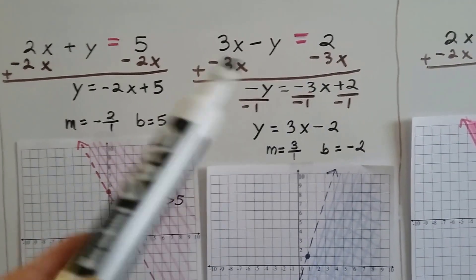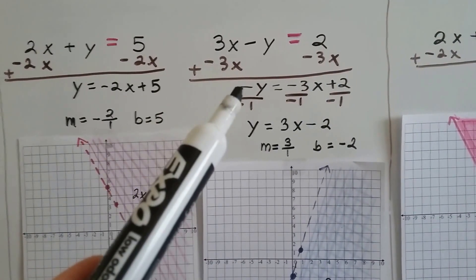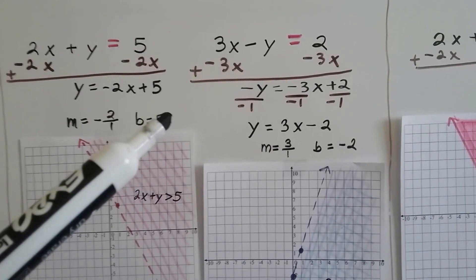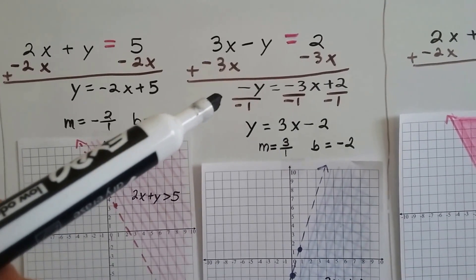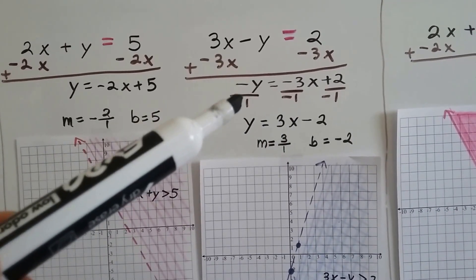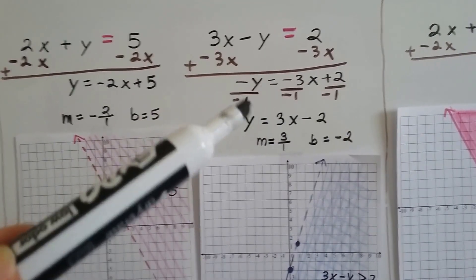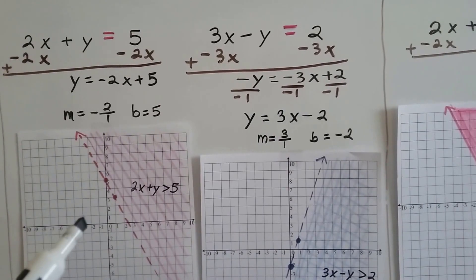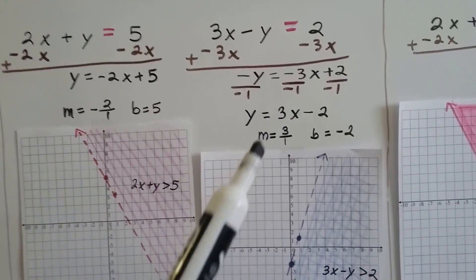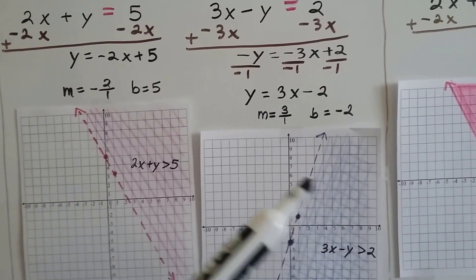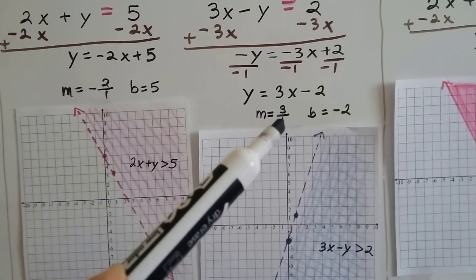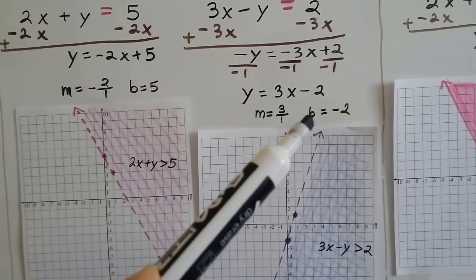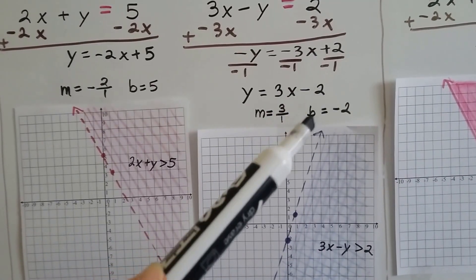We do the same thing for the blue one. We add a negative 3x to each side. We get negative y equals negative 3x plus 2, and to get rid of this negative, we know there's an invisible 1 there, so we can divide each term by that negative 1. We get y equals 3x minus 2. It's a positive slope, so we know it's going to rise to the right.